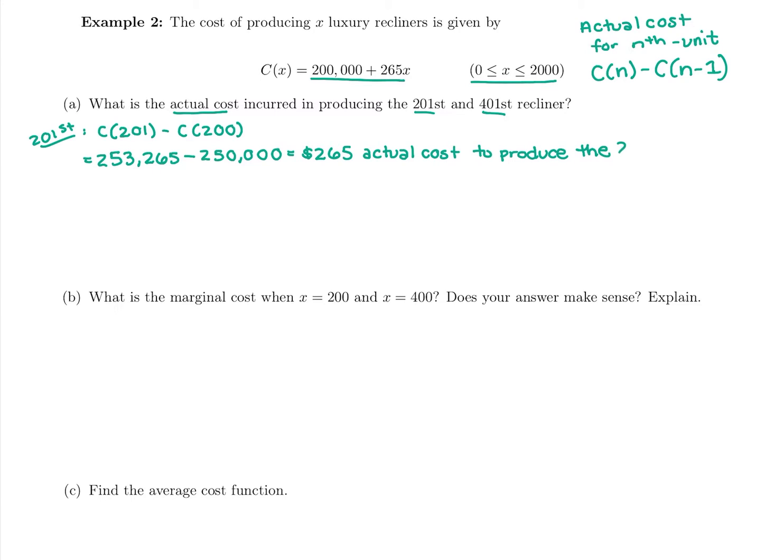We're going to interpret this: $265 is the actual cost to produce the 201st recliner. So if they're selling these things for $250 that's way too high of a production level, it's costing them too much money to make that many, maybe they're having people work overtime. But if they're selling these luxury recliners for $3000 or something crazy a pop and it's only costing them $265, yeah bump up your production level, it's worth it.